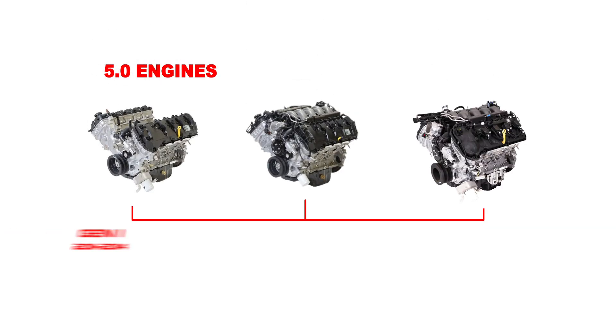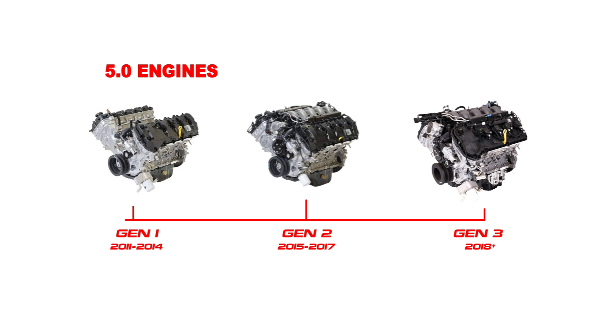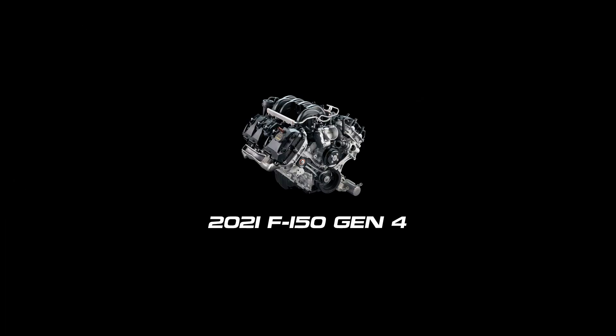The timeline for the F-150 is very similar to the Mustang, almost identical. 2011 to 2014 was Gen 1, 2015 to 2017 was Gen 2, 2018 to 2020 is Gen 3, and then we have the addition of the Gen 4 Coyote engine which is brand new for 2021.